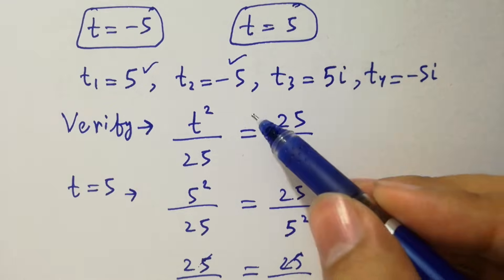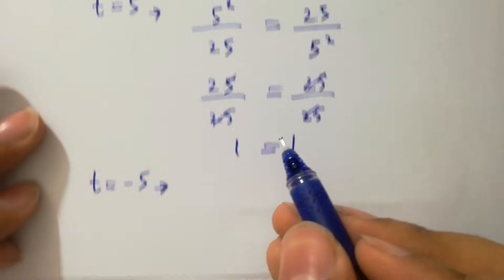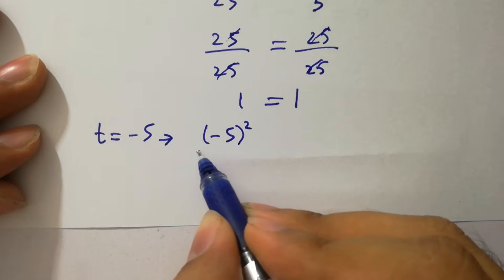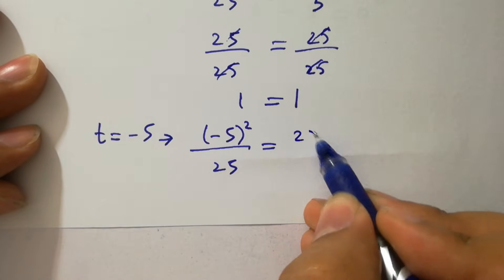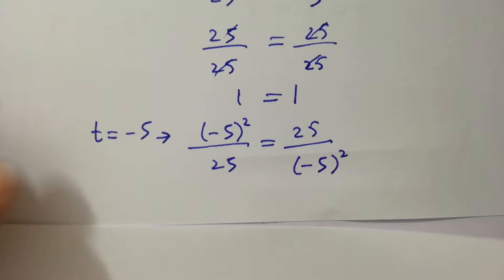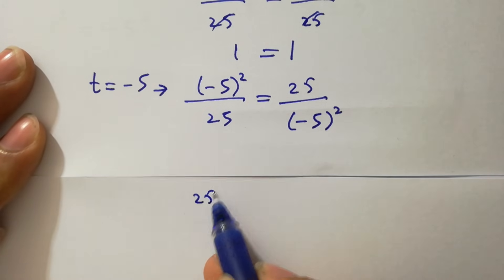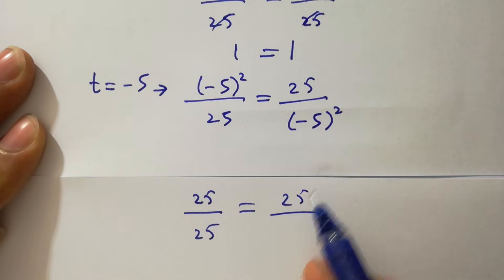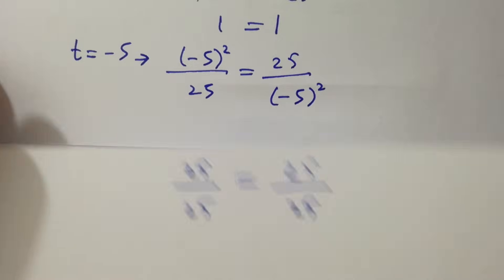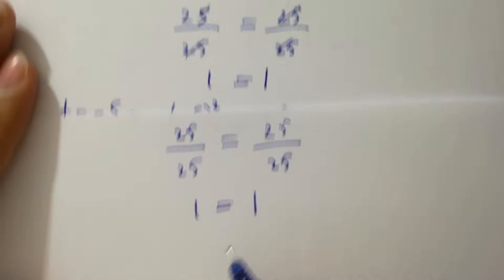Now take t equals −5. We have (−5)² over 25 equals 25 over (−5)². Since minus times minus is plus, 5×5 is 25 over 25 equals 25 over 25. Again 1 equals 1, so left hand side equals right hand side.